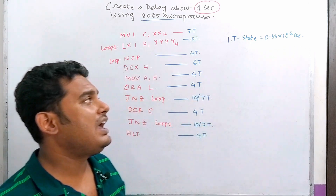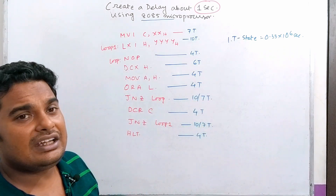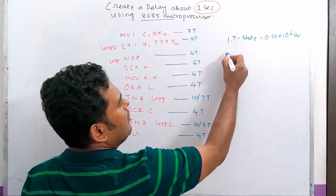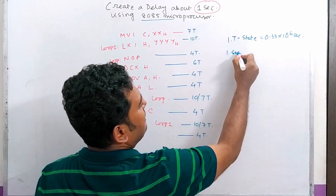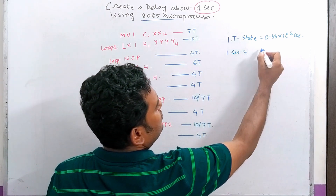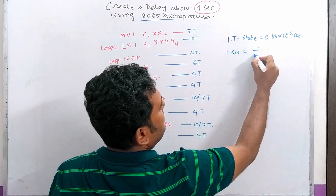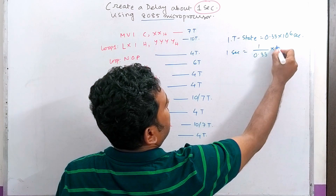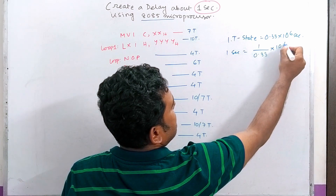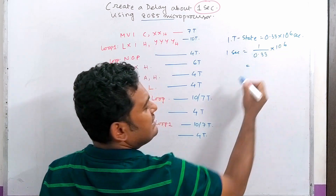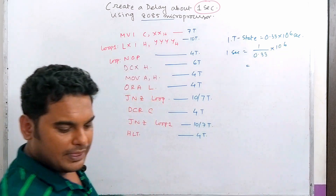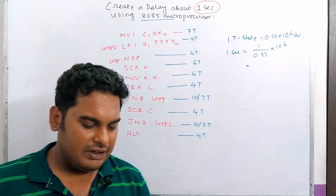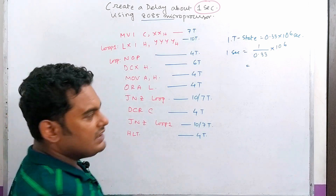So 1 second equals 1 divided by 0.33 × 10⁻⁶, which equals approximately 3,030,303 T-states. Now, what do we need to do? We set up our equation using this total T-state count of 3,030,303.